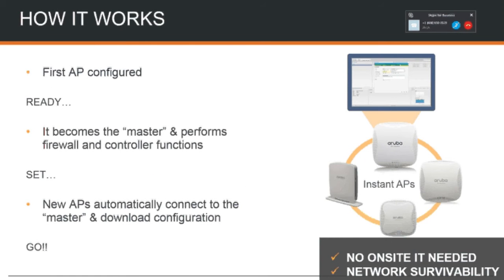This is actually how you would configure it out of the box. Let's say you get a shipment — you get a few Instant access points. You pull the first one out of the box, and the first one that boots up becomes the virtual controller. In the boot process, they look for a virtual controller, and if they don't find one, they elect themselves and become the virtual controller. Subsequent access points that you boot up look for that virtual controller, and if they find it, they marry themselves to it and join the cluster.